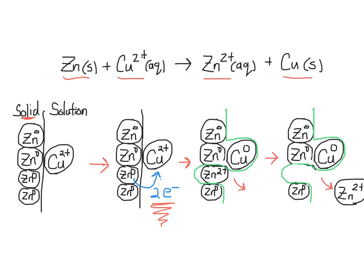When the electrons travel through an external circuit, that allows us to extract power from the reaction, so we essentially make a battery.